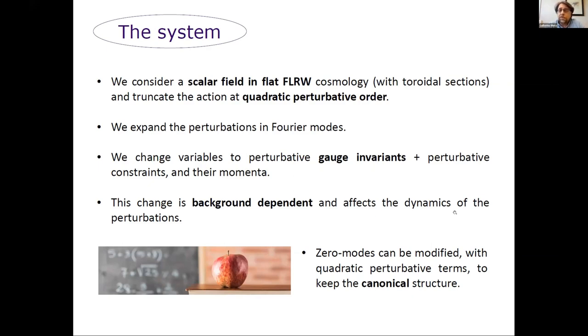We know that in Hamiltonian dynamics, it's possible to obtain a canonical set to describe the whole system that the background and the scalar perturbation form. But it's in general more convenient to describe the perturbations in terms of what is called perturbative gauge invariants, and add to them an abelian version of the perturbative constraints that were obtained by linearization of the spacetime diffeomorphism constraints of general relativity, together with suitable momenta. This was a suggestion, in fact, a construction introduced by Langlois.